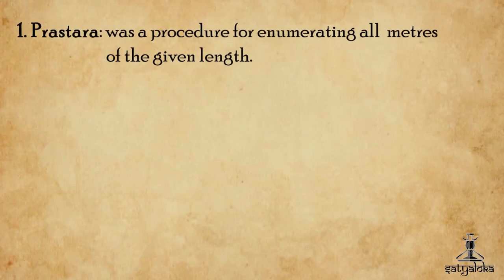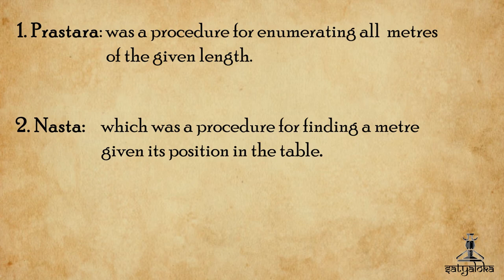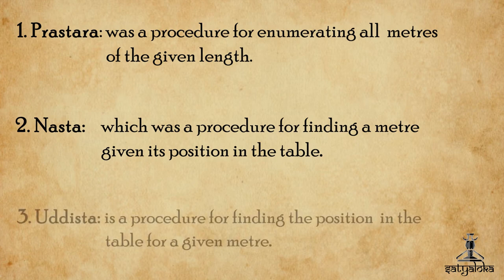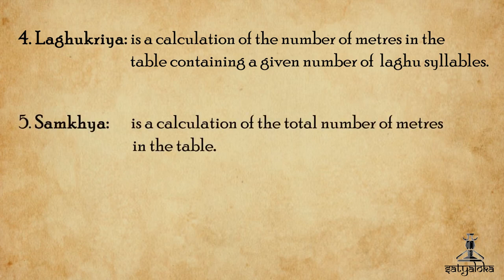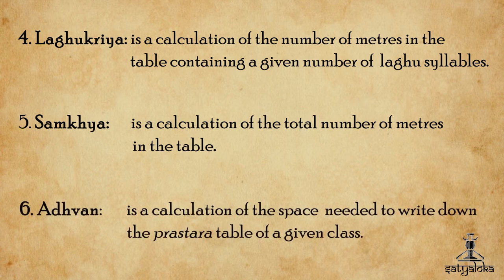The 11th century Ratnakara Shanti's Chando Ratnakara describes algorithms to enumerate binomial combinations of meters through Pratyaya. The six Pratyaya were: Prastara, a procedure for enumerating all meters of a given length; Nastha, a procedure for finding a meter given its position in the table; Uddishtha, a procedure for finding the position in the table of a given meter; Laghukriya, a calculation of the number of meters containing a given number of laghu syllables; Sankhya, a calculation of the total number of meters in the table; and Advana, a calculation of the space needed to write down the Prastara table of a given class.